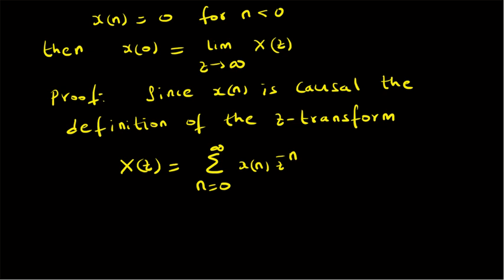Now by expanding this definition, or this series, we have X of 0 plus X of 1 times Z power minus 1 plus X of 2 times Z power minus 2, and so on up to infinity. So this is the series form of this summation.